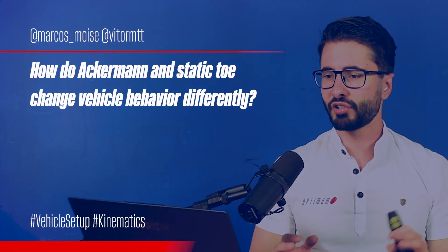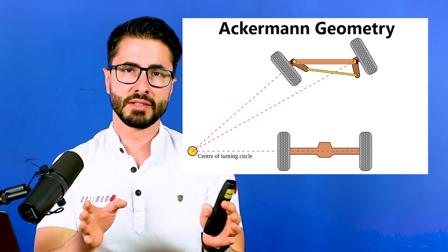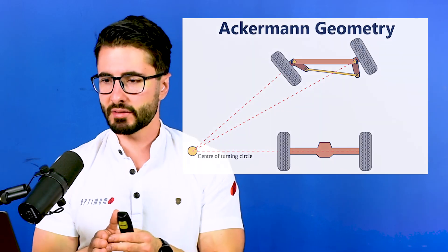How do Ackermann and static toe change vehicle behavior differently? For the Ackermann geometry, it is proportional to the steering — the more you steer, the more difference in steering you will have between the left and right sides. This means it has different influence on low-speed corners, where you have a lot of steering, and high-speed corners, where you have really small steering. For low-speed corners you have a lot of influence from the Ackermann, while you have pretty much no influence in high-speed corners. In the same way, at corner entry it is not changing anything because you don't have steering wheel angle yet, while at the apex it's a lot more influential. At the track, it's hard to make an Ackermann change — very few race cars allow you to make a change, so you have to work around what you have.